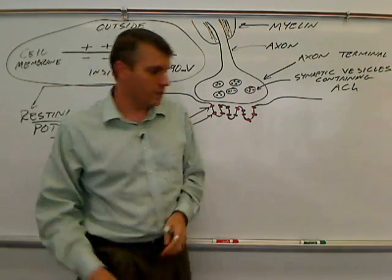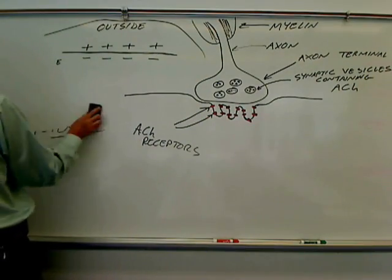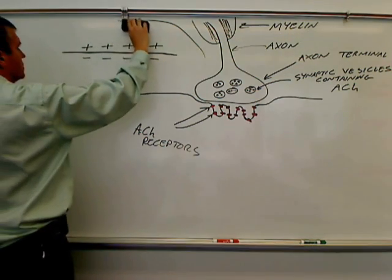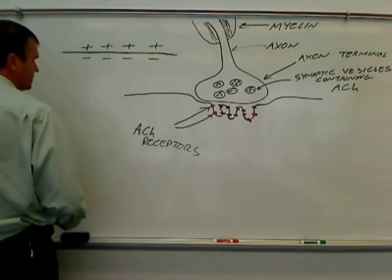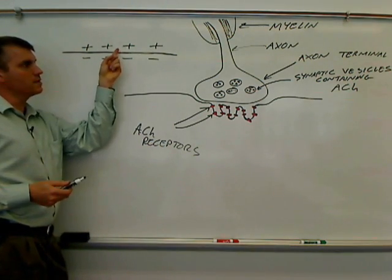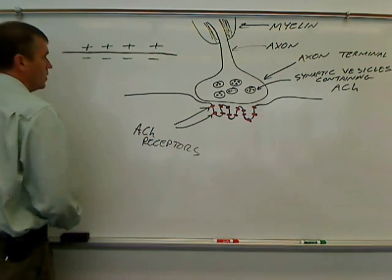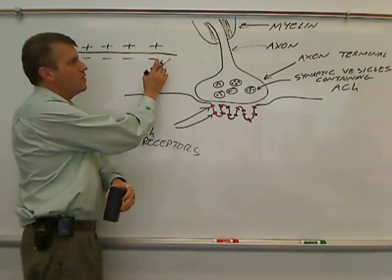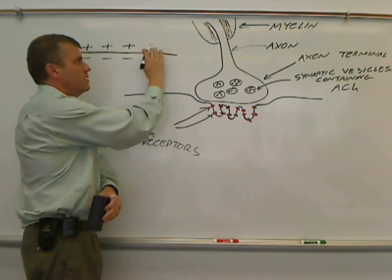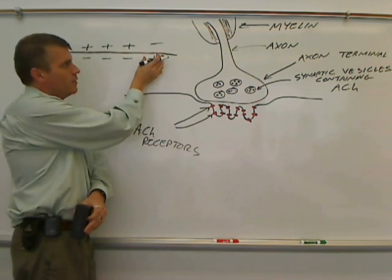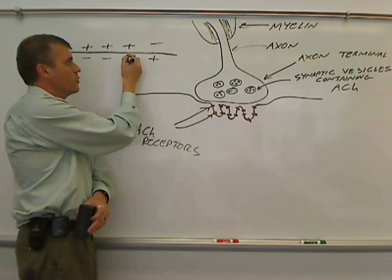Now let's talk about action potential. So remember, resting potential, the inside of the cell is negative. The outside of the cell is positive. When an action potential happens, part of the membrane gets stimulated to change its charge. The inside becomes positive. The outside becomes negative. This happening at this part of the membrane stimulates the next part of the membrane to go through the same thing.